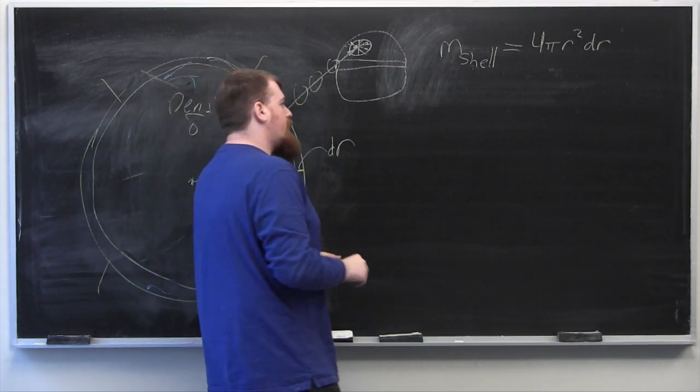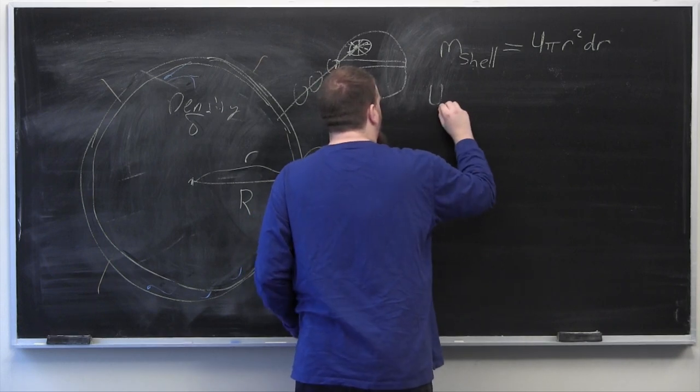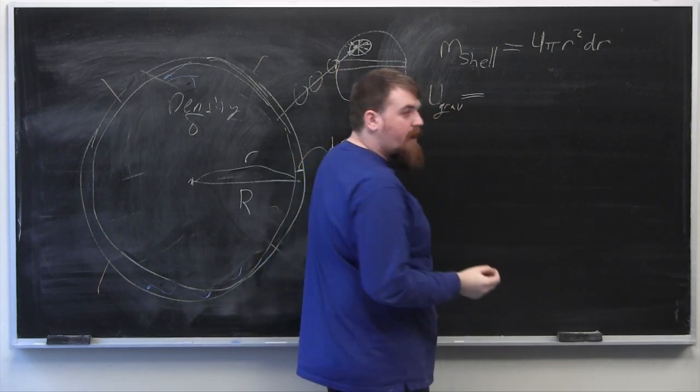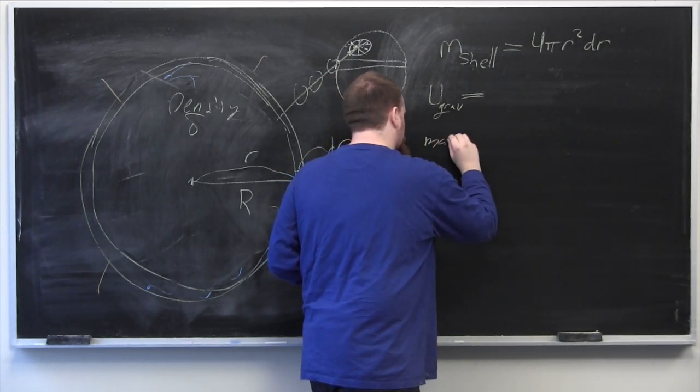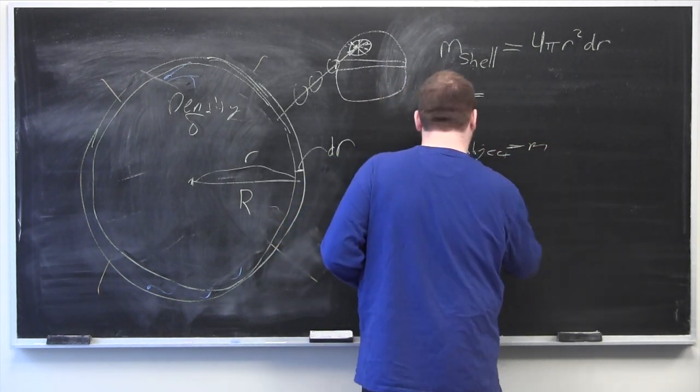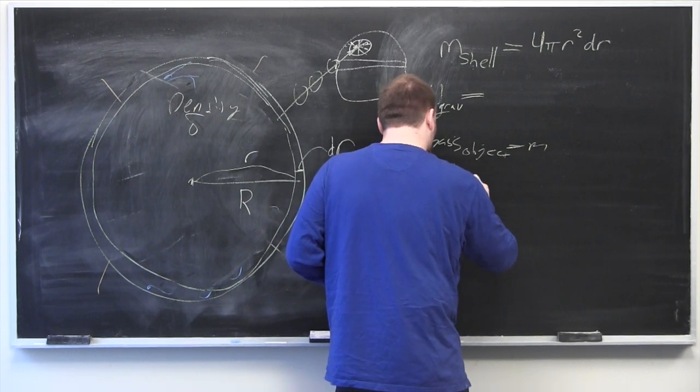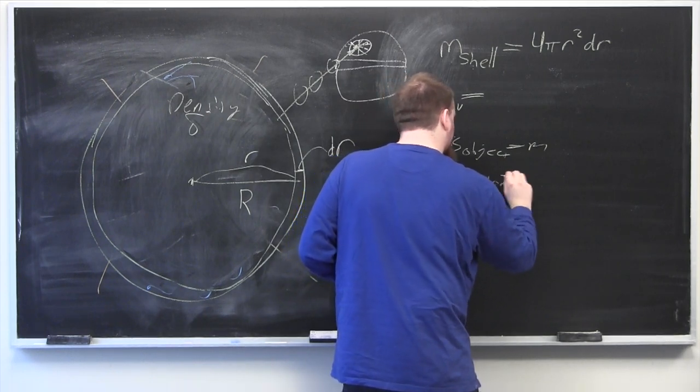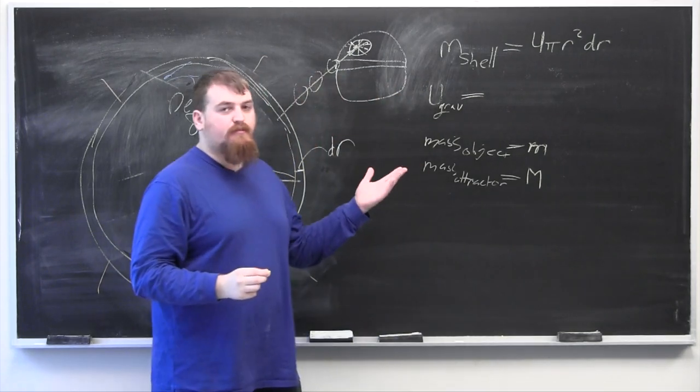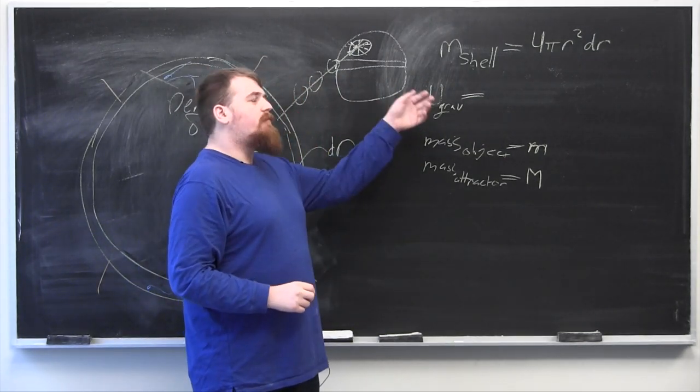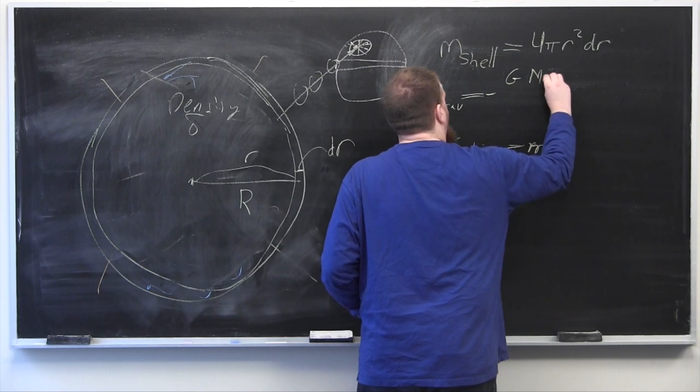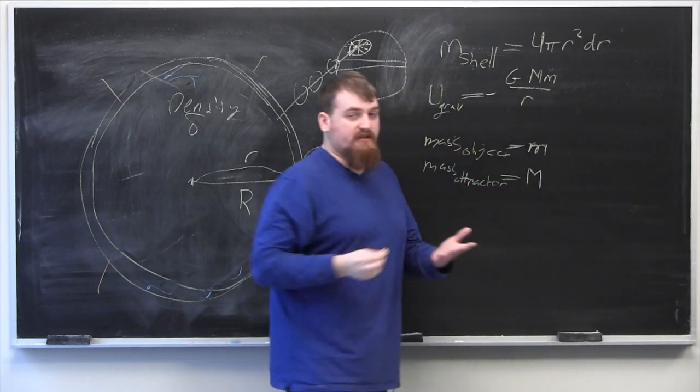Now Newtonian mechanics tells us that the gravitational potential energy of an object above an attractor will be equal to negative g m M over r, where g is the gravitational constant.